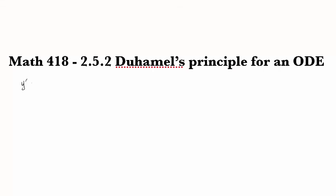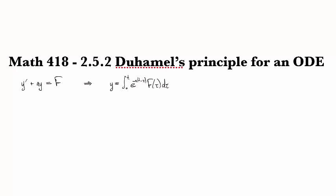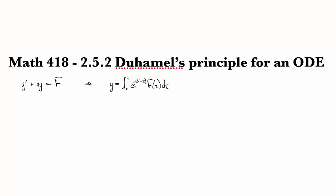So we just saw that the solution to this non-homogeneous first-order linear ODE can be expressed as the integral e to the minus a times t minus tau times f of tau d tau. So the way that we want to see this is we looked at the solution for the homogeneous version, and we looked at the solutions for the homogeneous versions started at different points in time, and integrated them all together and found that the net effect was equivalent to just looking at the non-homogeneous version.